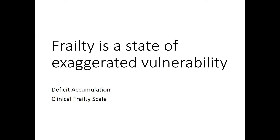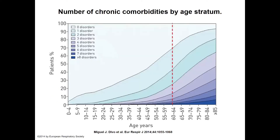Frailty is a state of exaggerated vulnerability. Let me talk about deficit accumulation and the Clinical Frailty Scale. As we age, we acquire problems and challenges, but we have coping skills and resilience to live with them. In the world of frailty, we call these deficits. As people get older they live with more chronic comorbidities — even starting at age 60, the proportion of people with multiple disorders increases significantly.